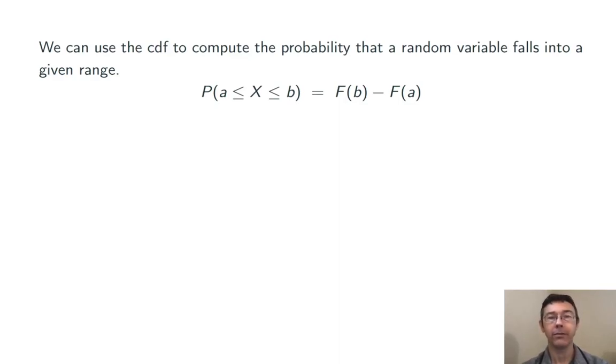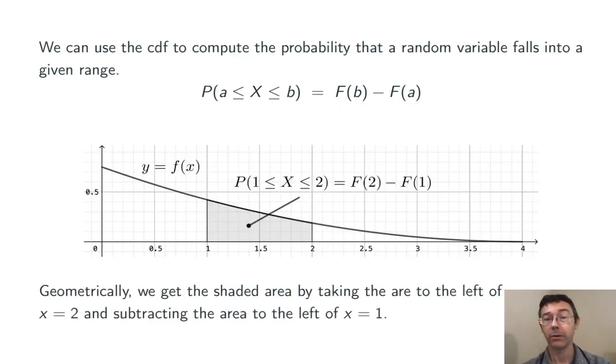We can use the CDF, capital F of x, to compute the probability that the random variable falls into any given range. Like this. The probability that x falls between a and b is big F of b minus big F of a. The picture makes this pretty obvious.